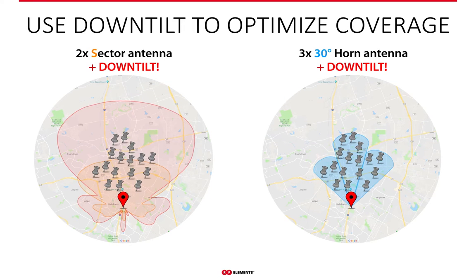With traditional sectors, using down tilt to cover high density areas near the tower is difficult because of the narrow beam within the elevation plane of these antennas. Moreover, down tilt is usable only up to two or three degrees since these antennas are extremely sensitive to it — anything beyond a few degrees makes the coverage pretty much non-existent. With Horns, thanks to the symmetrical radiation pattern, plus or minus 25 degrees of down tilt helps you optimize coverage depending on the user base you're trying to serve, and further improve the noise floor the radio is working with because the down tilt also causes the antenna to receive less noise from distant sources.